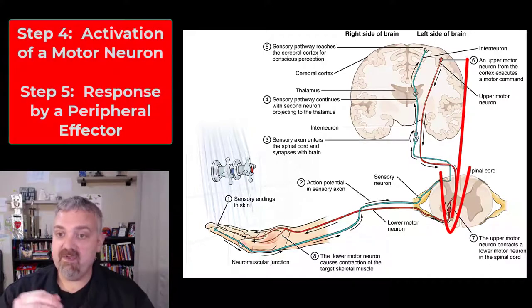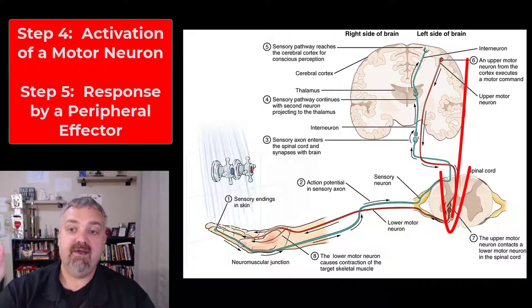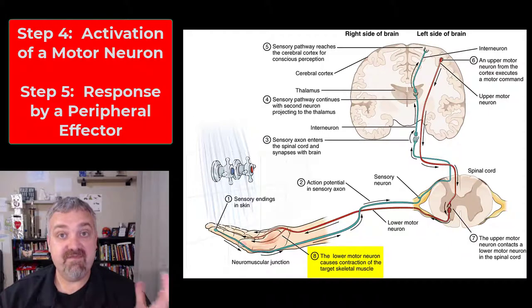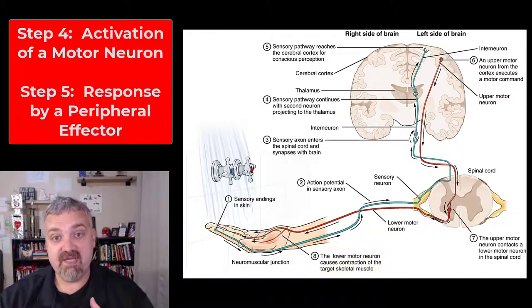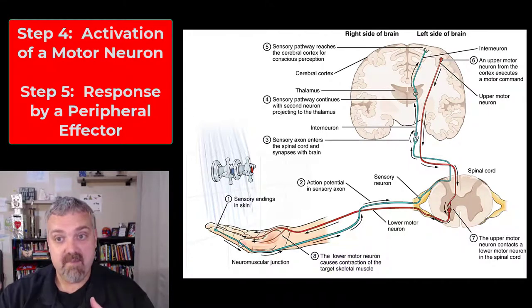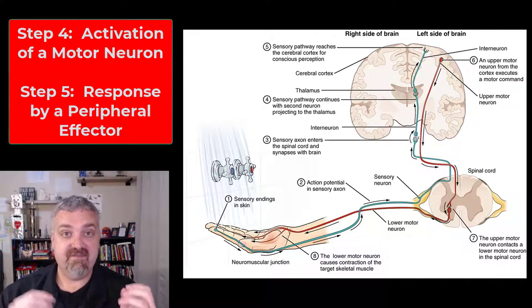But now we're going to travel back the other way. So now the motor nerves have been activated. So it's going to be the red nerves here and they're going to send the signal information down the brain, down the spinal cord to a peripheral effector. So this started with the receptor, then a sensory nerve, then the information was processed. Now we have a motor nerve involved until we reach the effector.